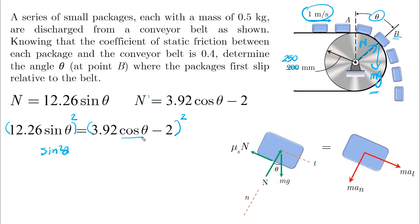And if you remember from trigonometry, sin² θ plus cos² θ is equal to 1. So you can replace sin² θ with 1 minus cos² θ.